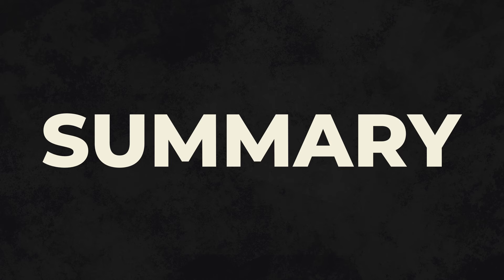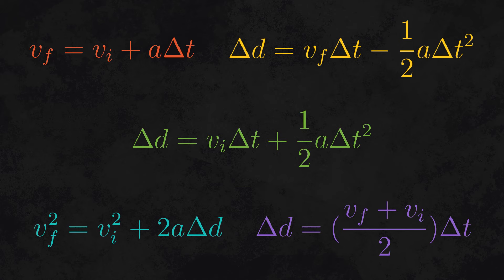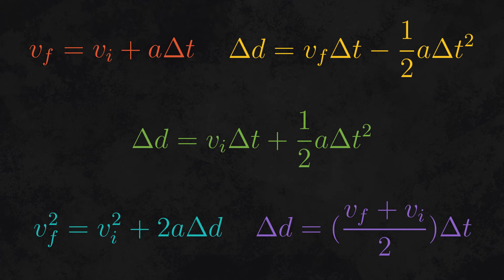In conclusion, kinematics relates five motion variables - initial speed, final speed, displacement, acceleration, and time - using the five kinematic formulas. If you have any three of these variables, you can use the formulas to find the remaining two.